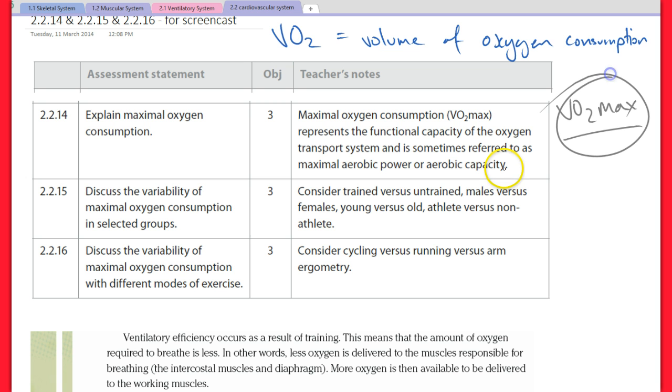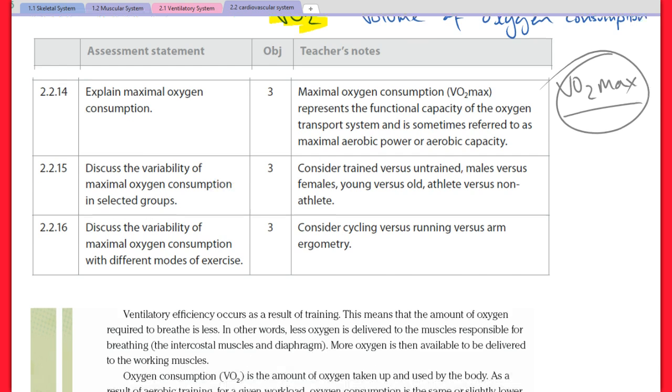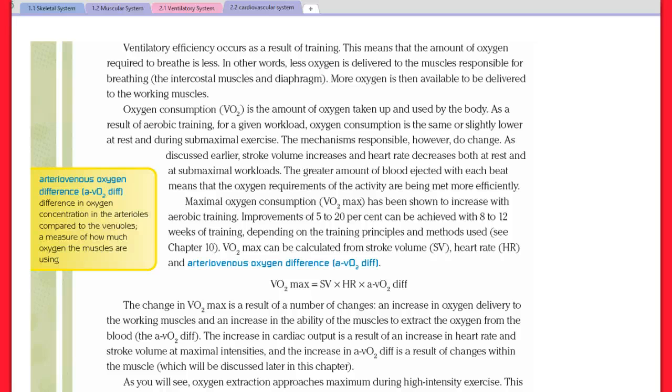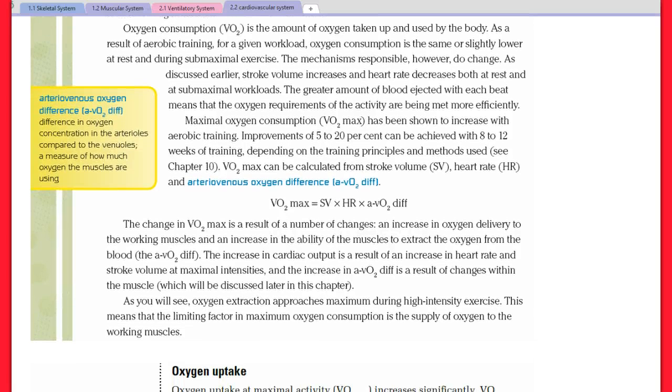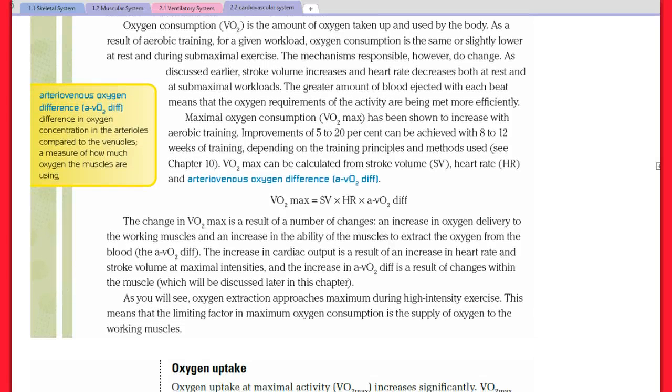VO2 max is the maximum amount of oxygen that can be utilized per minute, whereas VO2 is simply the volume of oxygen you are using per minute. So here we go, oxygen consumption, which I've just said VO2, is the amount of oxygen taken up and used by the body.